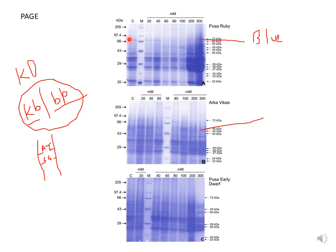In the first lane of all three gels, molecular markers or ladders are loaded. Proteins are measured in kilodaltons (kDa), ranging from 205 kDa to 20 kDa — the smaller the size, the smaller the protein unit. We can determine the size of an unknown protein using the ladder; for example, if a band migrates just below the 29 kDa marker, we can estimate it is approximately 27 kDa. We can also compare three different plant cultivars — Pusa Ruby, Arco-Visa Vikas, and Pusa Aldi Dwarf.